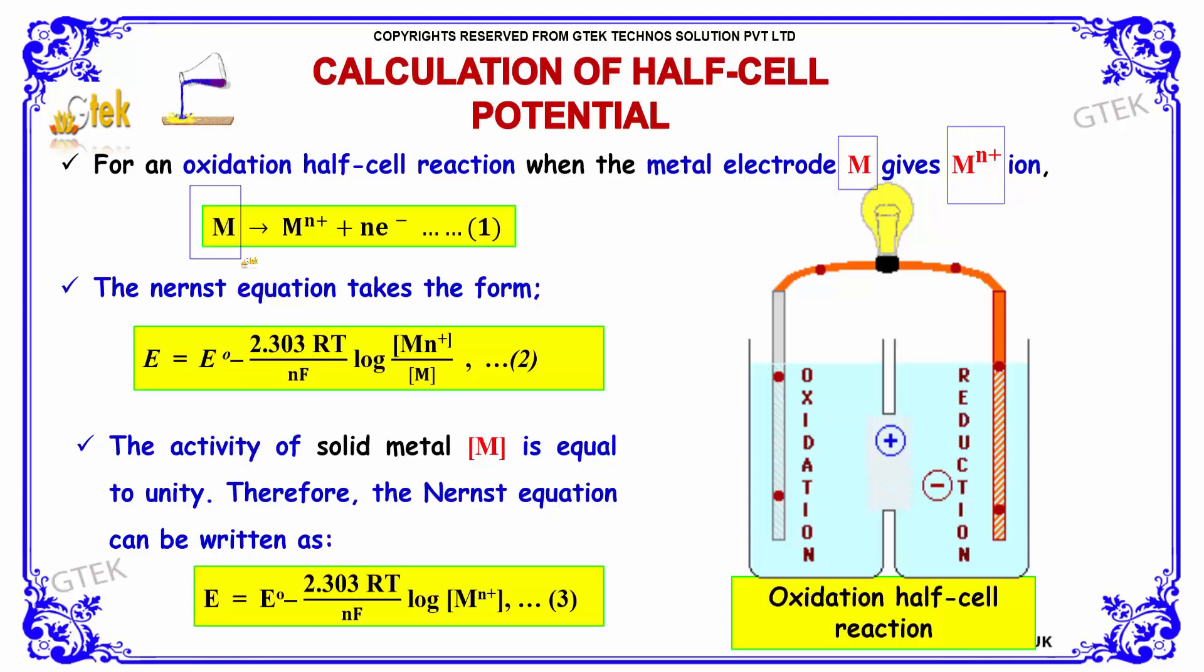M equals Mn+ plus ne- as equation 1. The Nernst equation takes the form: E = E° - (2.303RT)/(nF) log([Mn+]/[M]), mentioned as equation 2.